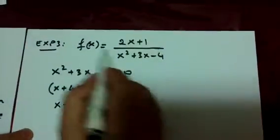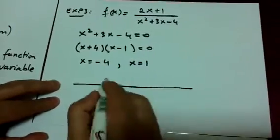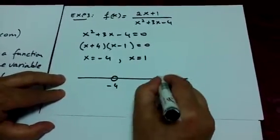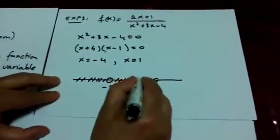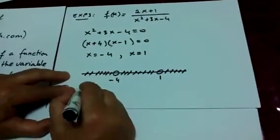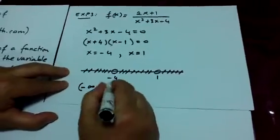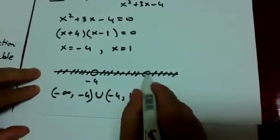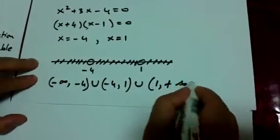Since the denominator equals zero at those points, f(x) is not real there, so they must be excluded. On the number line, negative four is on the left and one is on the right. The domain is all real numbers except negative four and one. In interval notation: negative infinity to negative four, open, union negative four to one, open, union one to positive infinity.